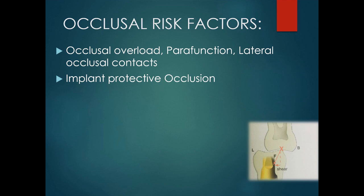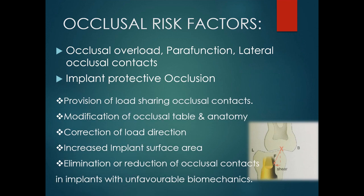As per IPO, there are five features needed to protect the implant from occlusal overload. First, provision of load-sharing occlusal contacts. Second, modification of occlusal table and occlusal anatomy — occlusal table of implant-supported crowns should be up to 30% narrower, avoiding sharp cusps and deep grooves, with shallower cuspal inclination. Third, correction of load direction — the primary contact should always be along the long axis. Fourth, increased implant surface area — Misch recommended increasing implant width, as a 1 mm increase in width can increase surface area by 30% and decrease force on the bone.